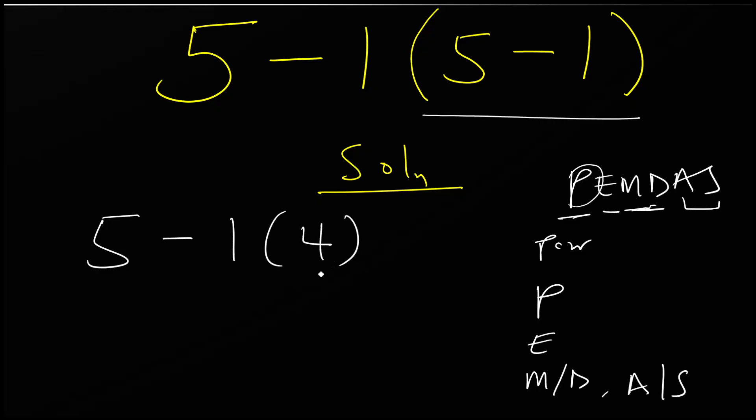Parenthesis gives us 4. Now remember, parenthesis next to a number means multiplication, so it's -1 times 4. We have multiplication here, so 5 - 4. Therefore 5 - 4 is 1. Subscribe for more videos, thank you.